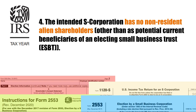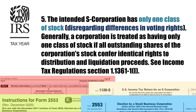Number 4. The intended S-Corporation has no non-resident alien shareholders, other than as potential current beneficiaries of an electing small business trust (ESBT). Number 5. The intended S-Corporation has only one class of stock, disregarding differences in voting rights. Generally, a corporation is treated as having only one class of stock if all outstanding shares of the corporation's stock confer identical rights to distribution and liquidation proceeds. See Income Tax Regulations Section 1.1361-1(l).